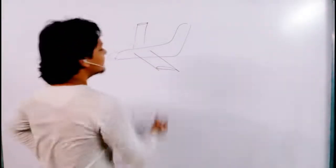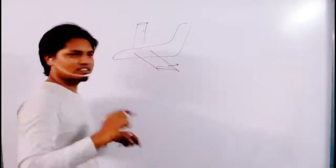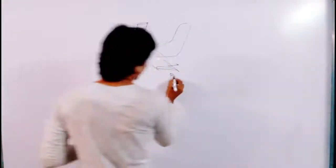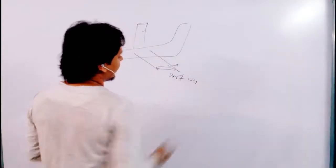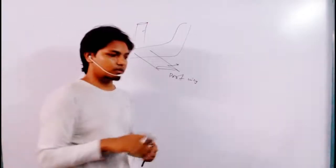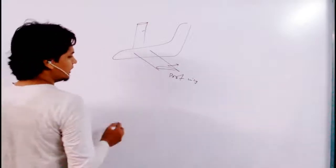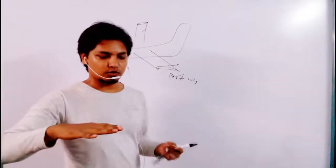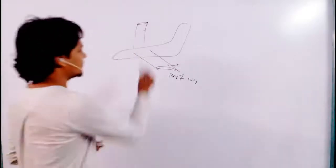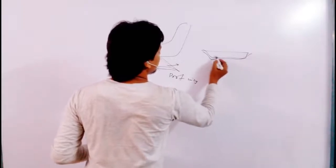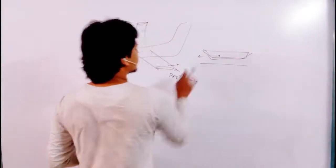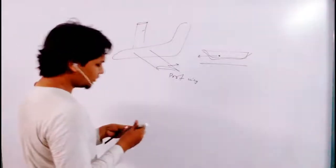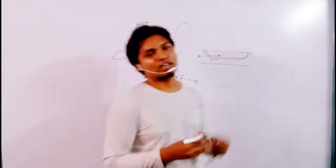I know why it is called the port wing, but I searched in books and other videos and I didn't find why it is called the starboard wing. The port wing name comes from a very ancient concept from ships. Whenever boats or ships came to the port, they used to touch the port from the left side — so the left side is called the port wing. If any of you know why it is called starboard wing, please comment below.